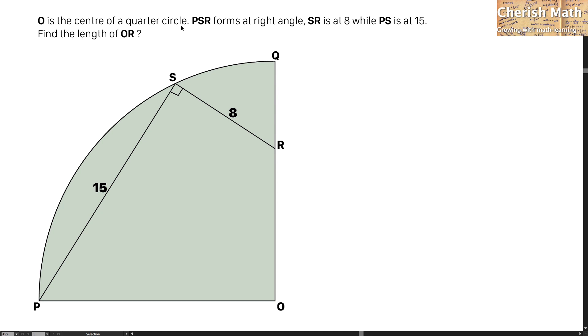O is the center of a quarter circle. PSR forms a right angle. SR is at 8, while PS is at 15. Find the length of OR.